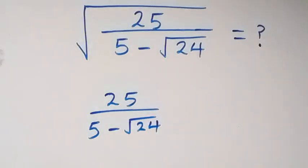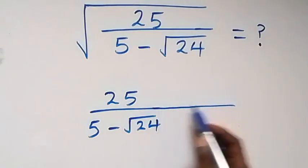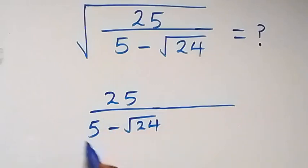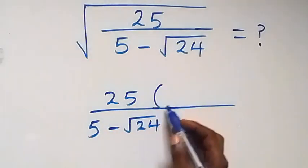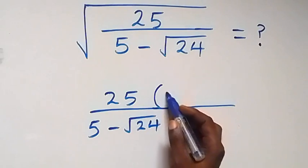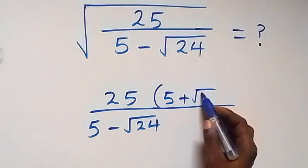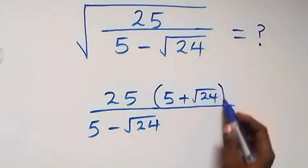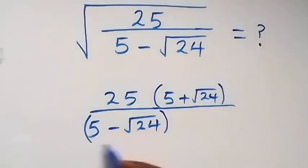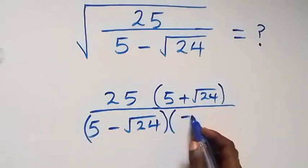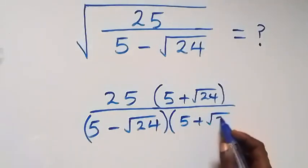We can rationalize this by multiplying the numerator and denominator by the conjugate of the denominator. Here we multiply by 5 plus root 24 on both numerator and denominator.